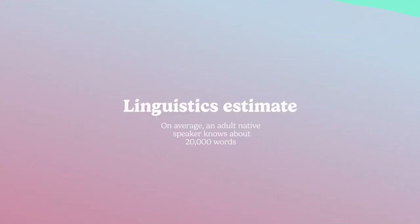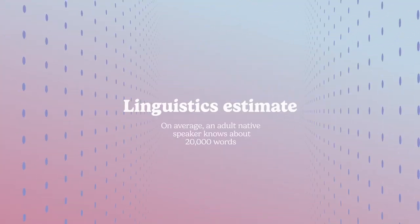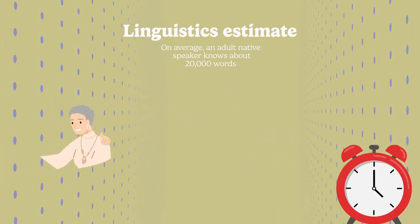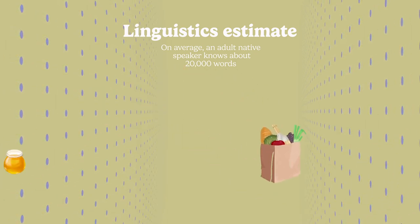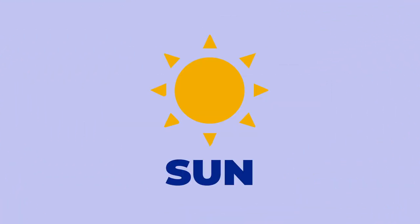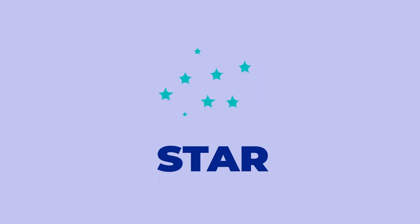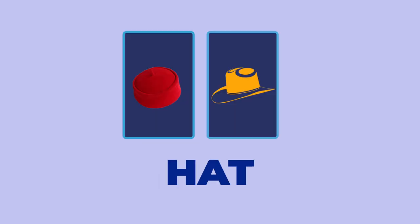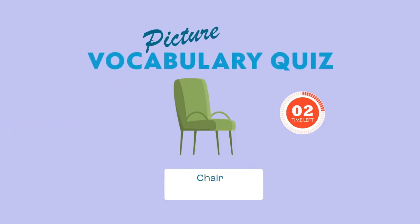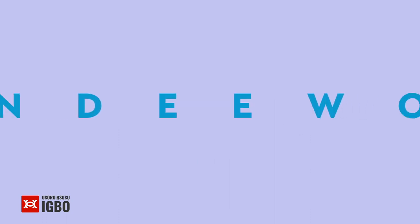Most linguists estimate that on average a native speaker of a language knows a vocabulary of about 20,000 words they can use in various conversations. In this two-part episode you will learn how to say sun, leopard, star, moon, and hat in Igbo. In the second part you will get to play the picture vocabulary quiz. This is a fun way to test your Igbo vocabulary knowledge.